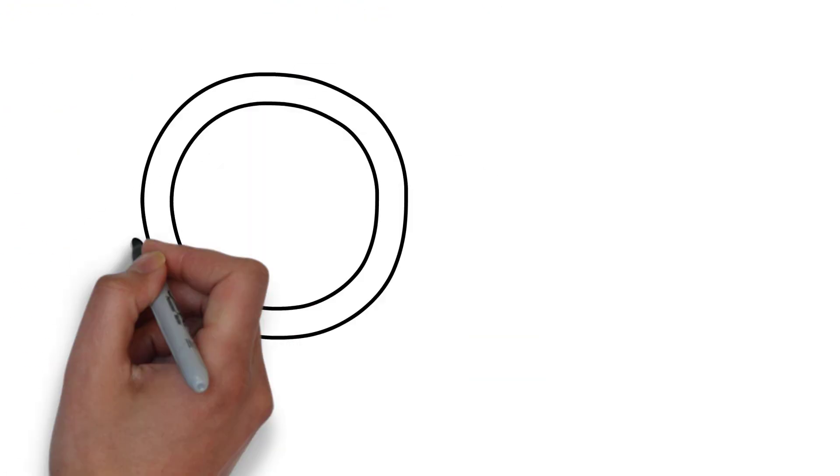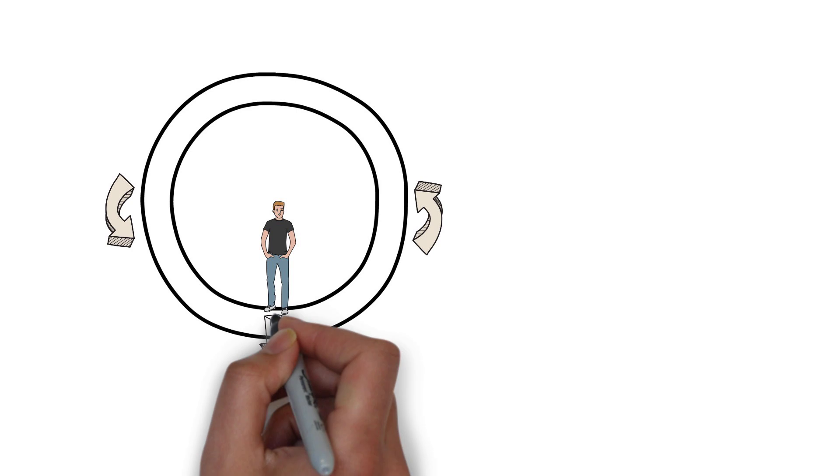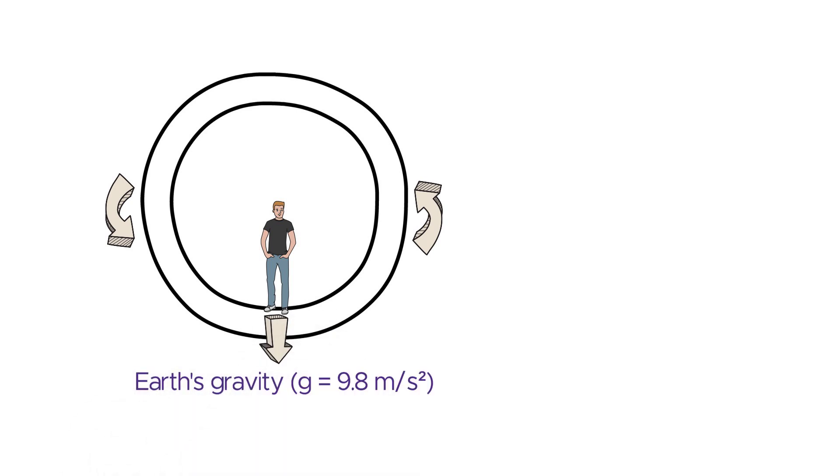Let's say we want to create artificial gravity similar to Earth's gravity, which is 9.8 meters per second squared, on a space station with a radius of 50 meters. We can calculate the required angular velocity using the formula.